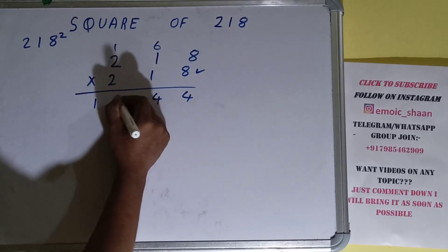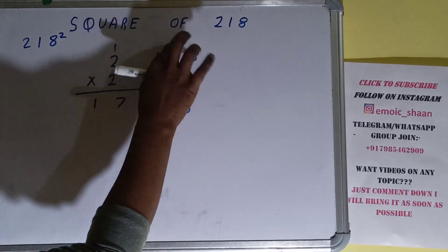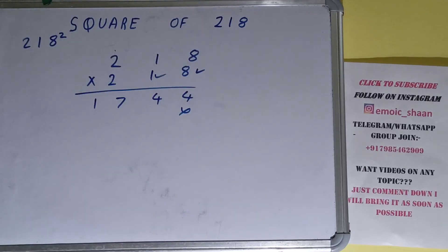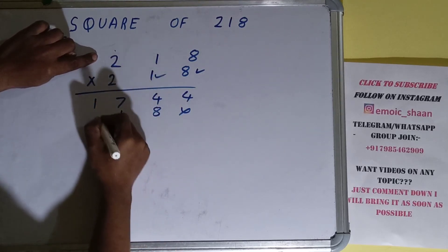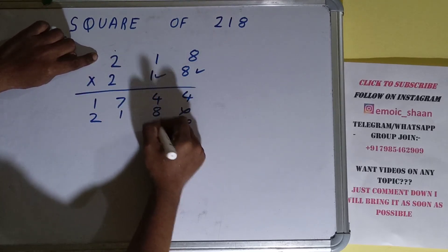16 plus 1 is 17. Okay, now 1 into any number is that number, so we can just copy this row down. This will be 8, this will be 1, and this will be 2. Now this 2